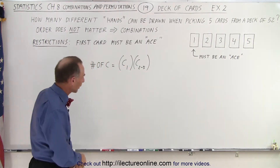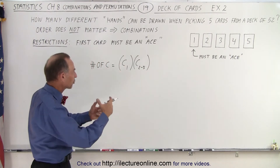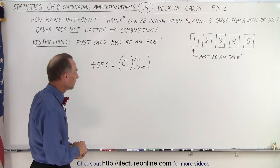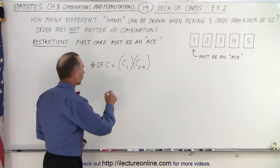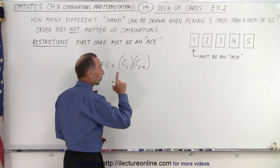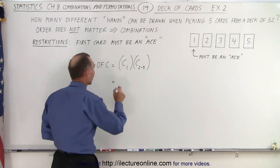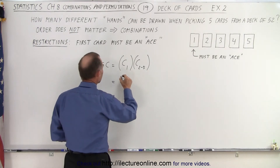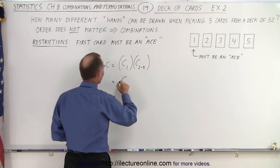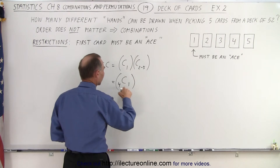That's a quick way to write what we're trying to do here. The number of combinations for the first card, since it must be an ace and there are only four aces, is going to be C(4,1) — there are four aces and we're going to pick one of them.